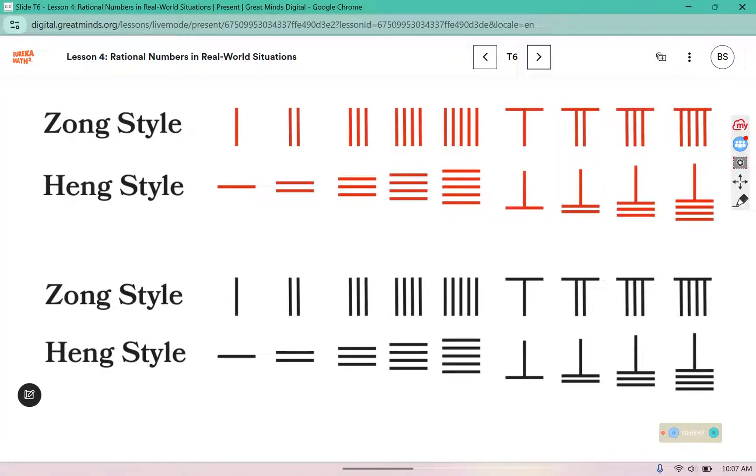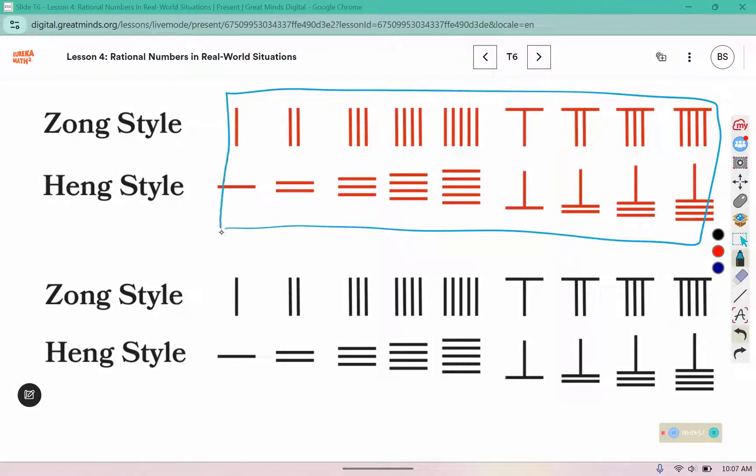But they ran into a dilemma of trying to figure out how to represent positive and negative values. So they used two different colors, the red and the black, to represent one being a fortune, and one being debt. And so you have a couple of different styles of ways of indicating numbers. You can think of this like tallies.